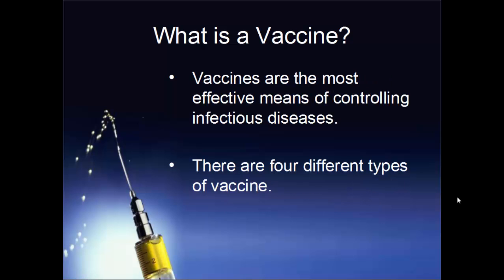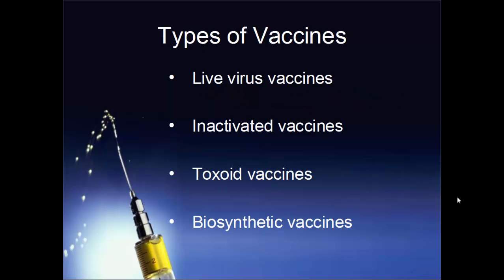Vaccines are also the most effective means of controlling infectious diseases — the more vaccines you have, the more protected you are, and the more vaccines a population has, the more protected that population will be. There are four main types of vaccines: live virus vaccines, inactivated or killed vaccines, toxoid vaccines, and lastly biosynthetic — also called conjugate — vaccines.